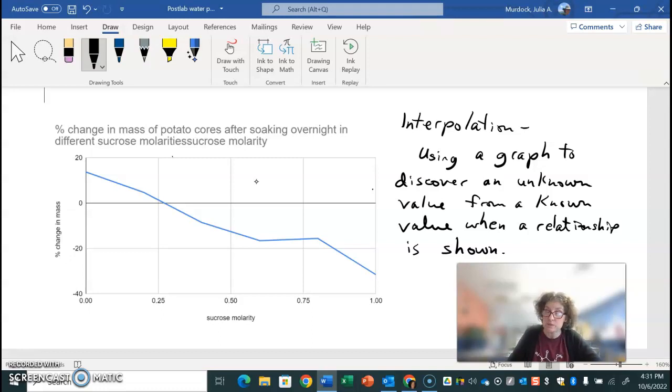So the change in mass for some of the potatoes increased. It gained mass. The water went into the potato. And in some of them, you can see it went negative. These are negative numbers over here. Here's the zero point. So some of the potatoes lost mass. Water flowed out of them.